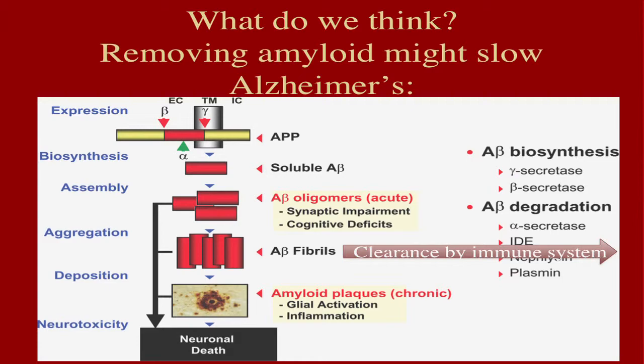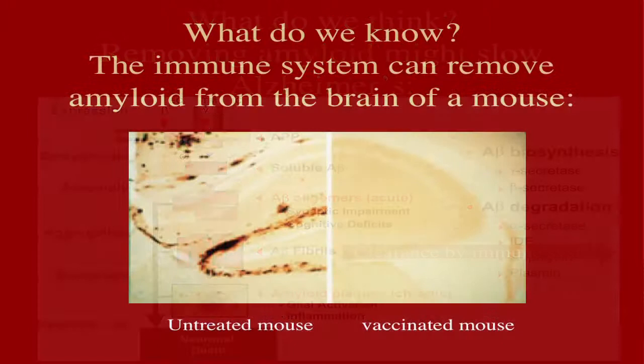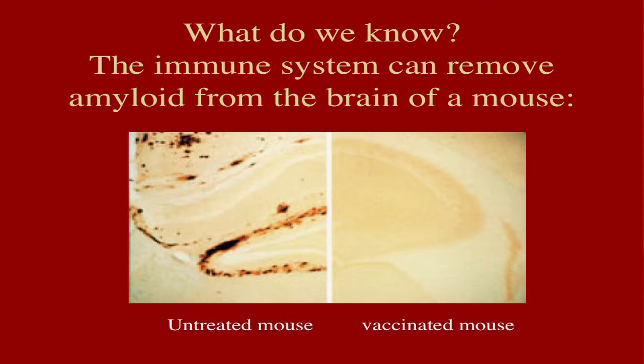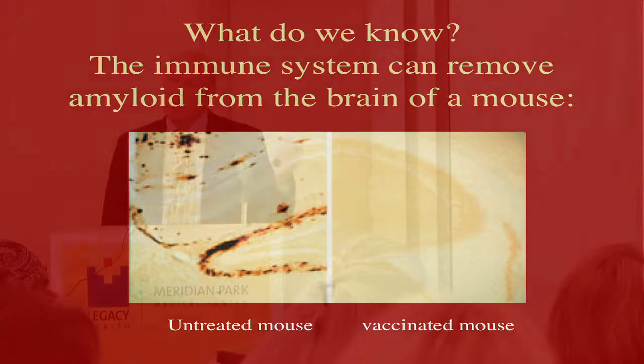This started with experiments in animals. Mice can be genetically engineered to get plaques in their brain — mice actually don't get Alzheimer's disease on their own, but they can be engineered so they get plaques. This microscope picture on the left shows a brain from a mouse engineered to get Alzheimer's disease; everything dark brown is a plaque, and they're actually running together. In this experiment recorded in 1999, the immune system of the animals was triggered so the animals would make antibodies directed against the plaques.